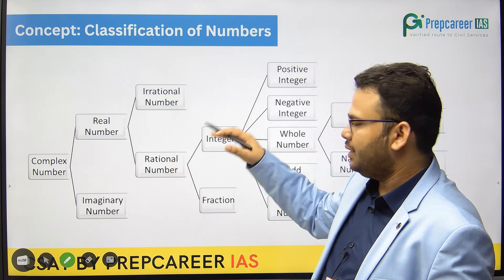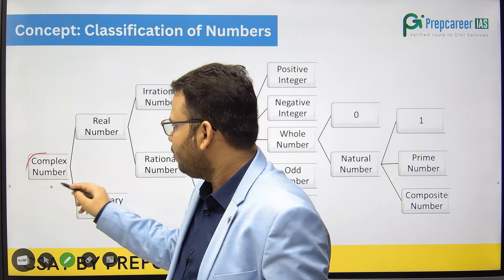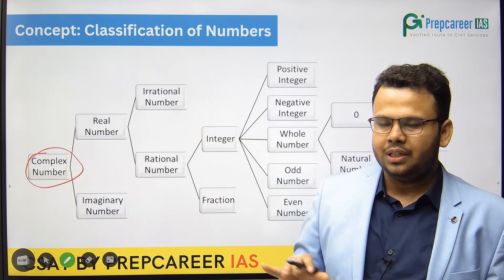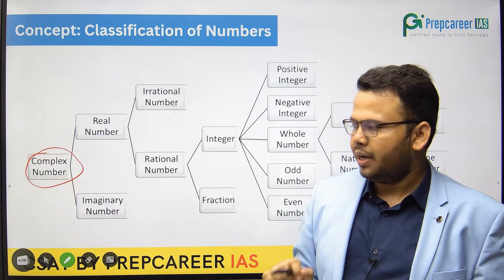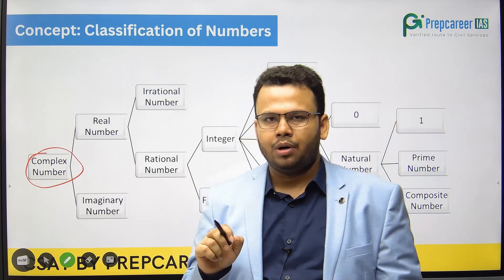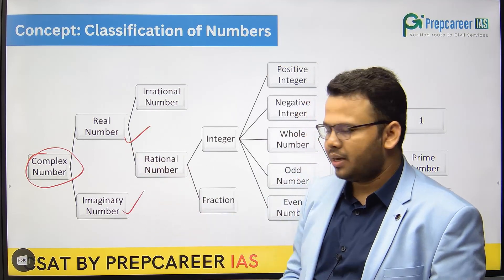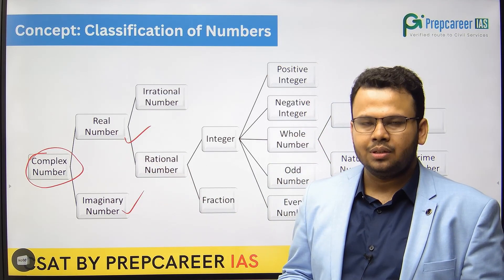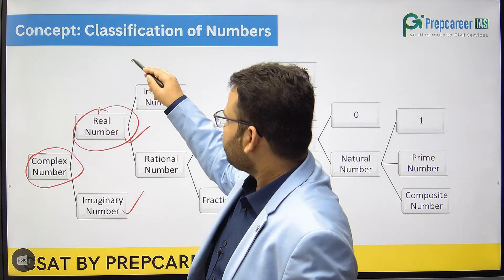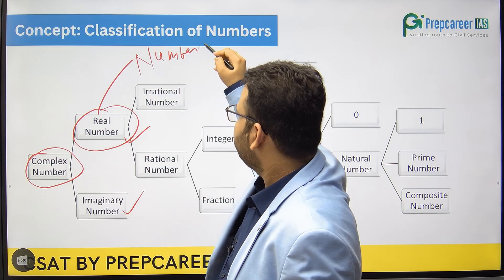So we will have a look at this concept. The first number is the complex number, but from an exam point of view this is not important, so we will skip that. Complex numbers are made up of two types of numbers: real numbers and imaginary numbers. Real numbers are those numbers which can be represented on the number line.